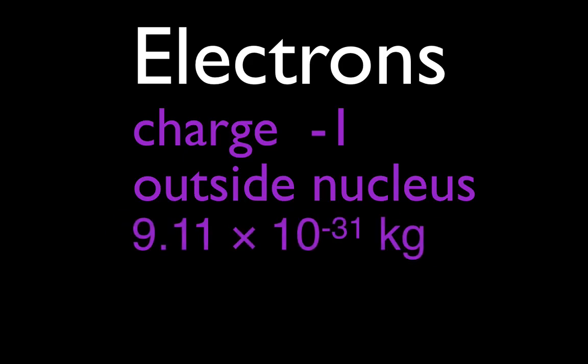Now, their mass is even less. The other one was 10 to the minus 27, the protons and the neutrons. The electrons have a mass of 10 to the minus 31. That is so much smaller. It doesn't really seem that much smaller, 27, 31, that's not that big difference.